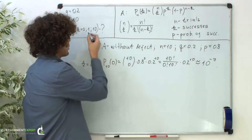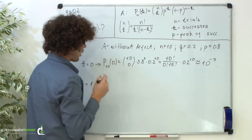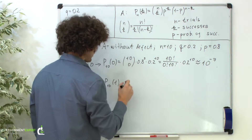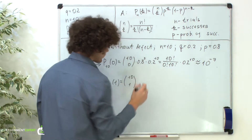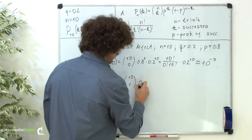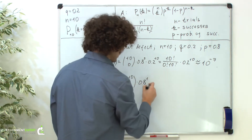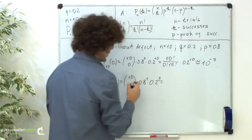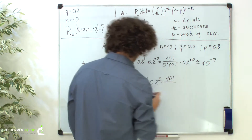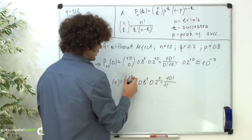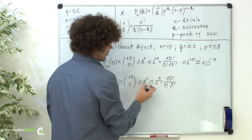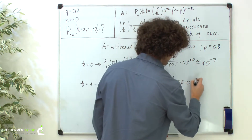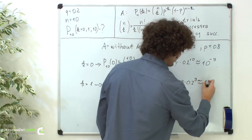Now let's consider the case when k equals 1, meaning we have one detail without defect. The probability of 1 success out of 10 trials equals 10 choose 1, times 0.8 raised to the first power, times 0.2 raised to the power of 10 minus 1, which is 9. This equals 10 factorial over 1 factorial times 9 factorial, times 0.8, times 0.2 raised to the 9th power. And this is approximately 10 raised to the negative 6th power.